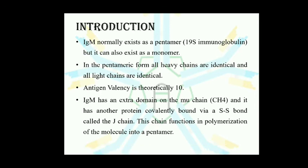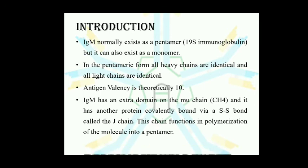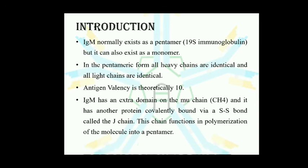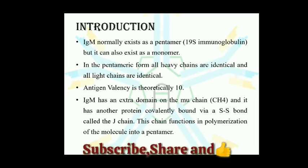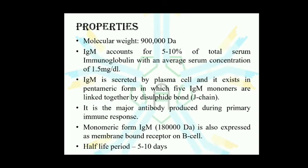IgM also has an extra domain on the mu chain, that is the CH4, which is bound to another important protein through covalent bonding — specifically a disulfide linkage — called the J-chain. This J-chain plays an important role in joining five different monomers to form the pentameric form of IgM, meaning it is responsible for the polymerization of IgM antibodies.